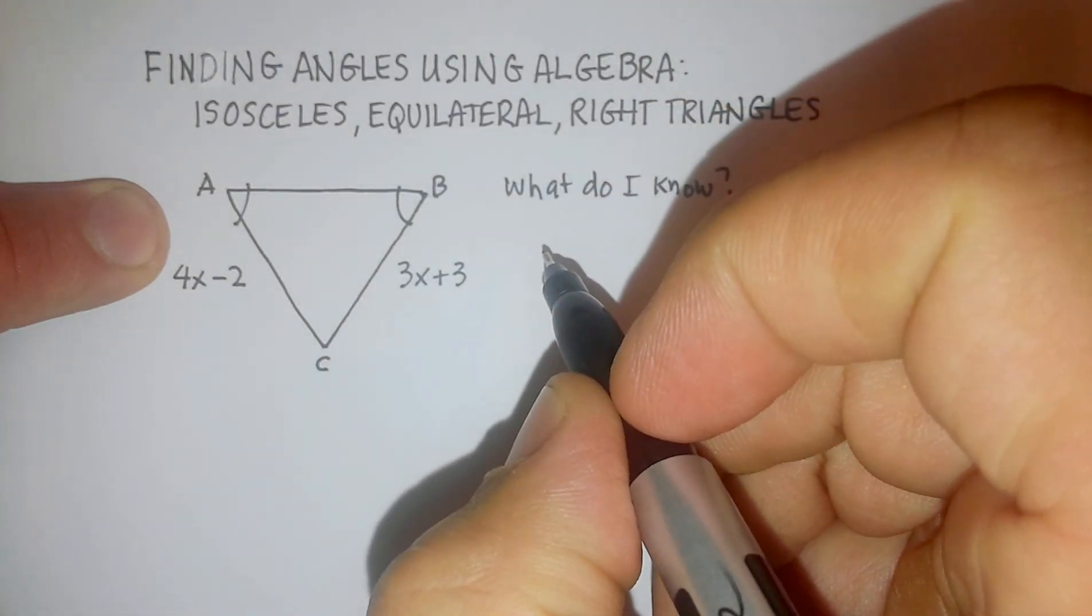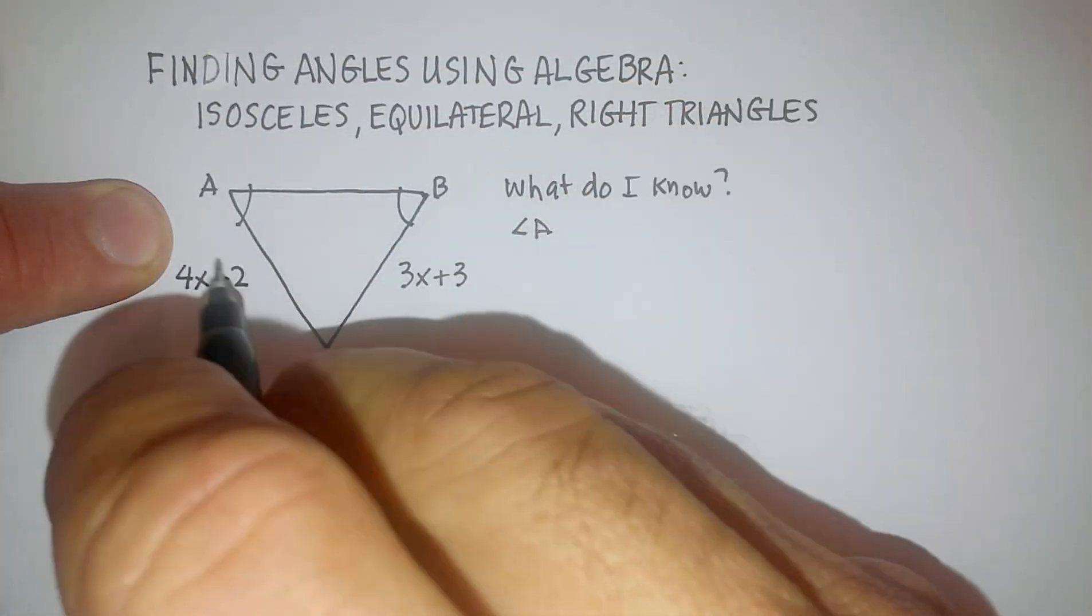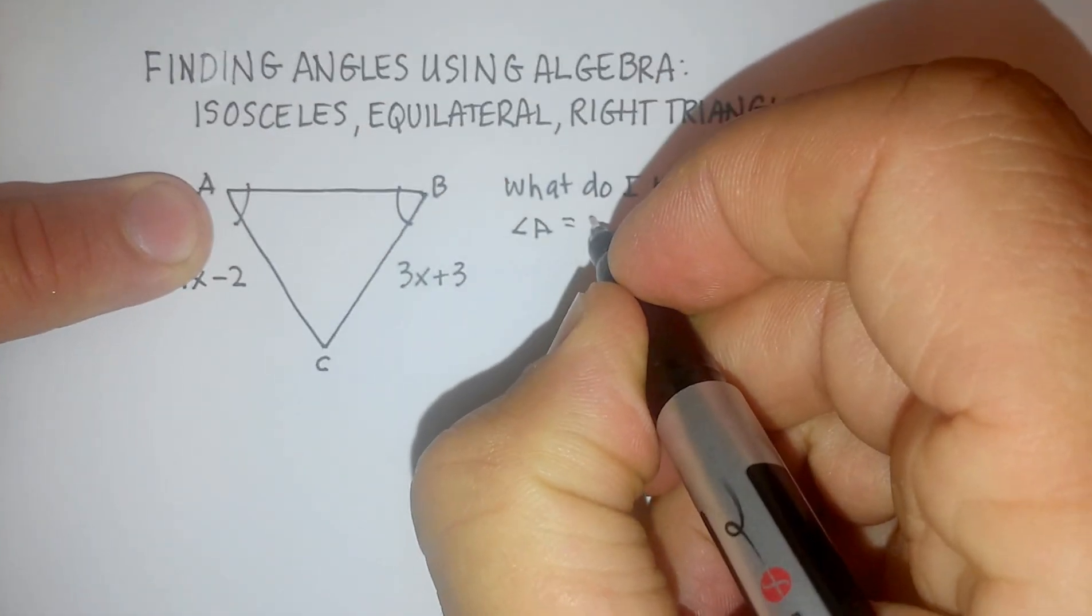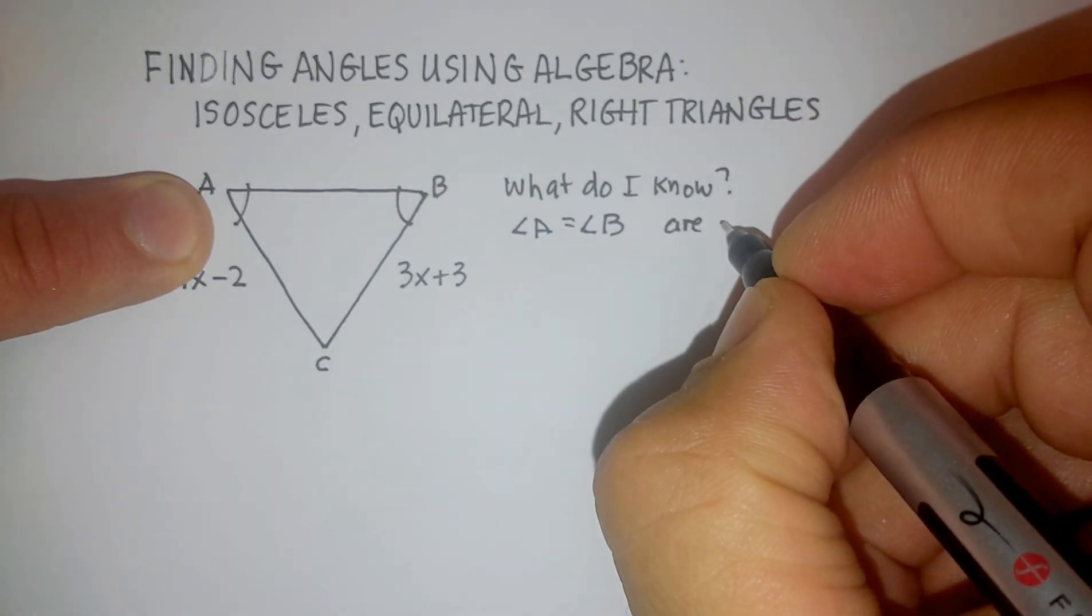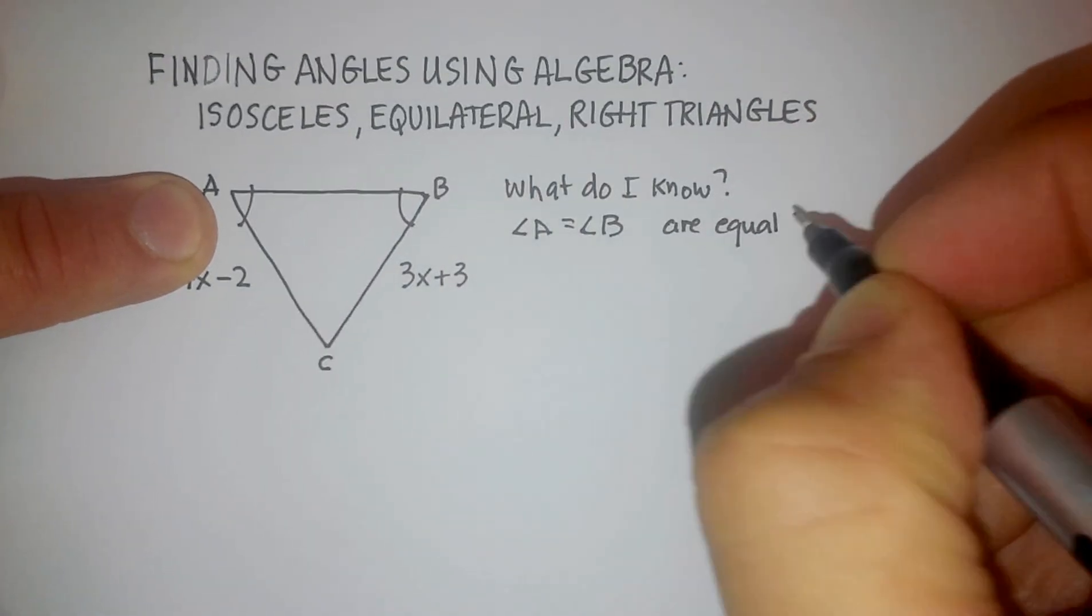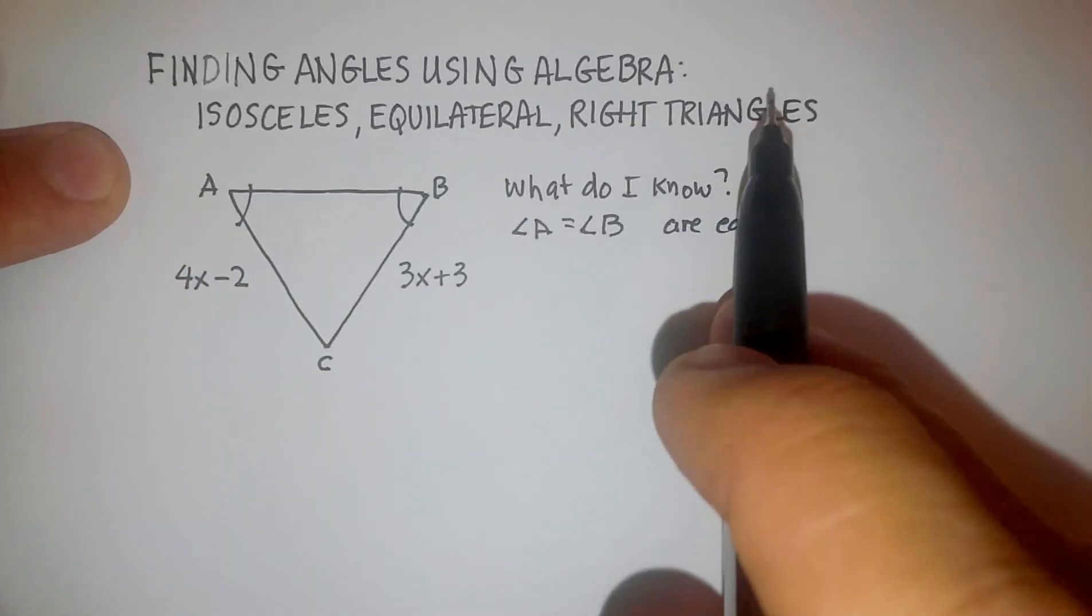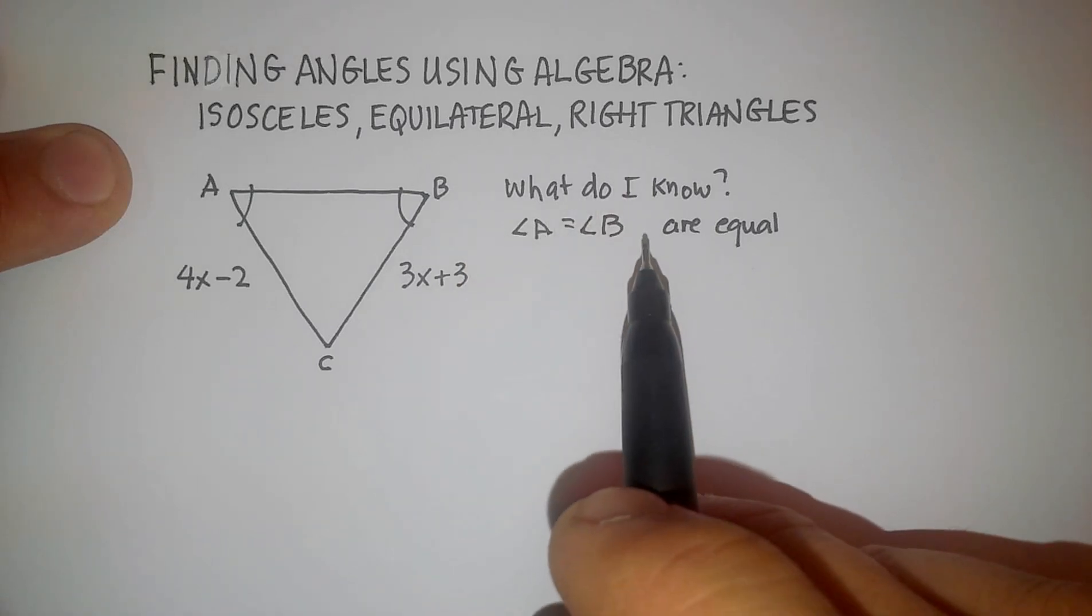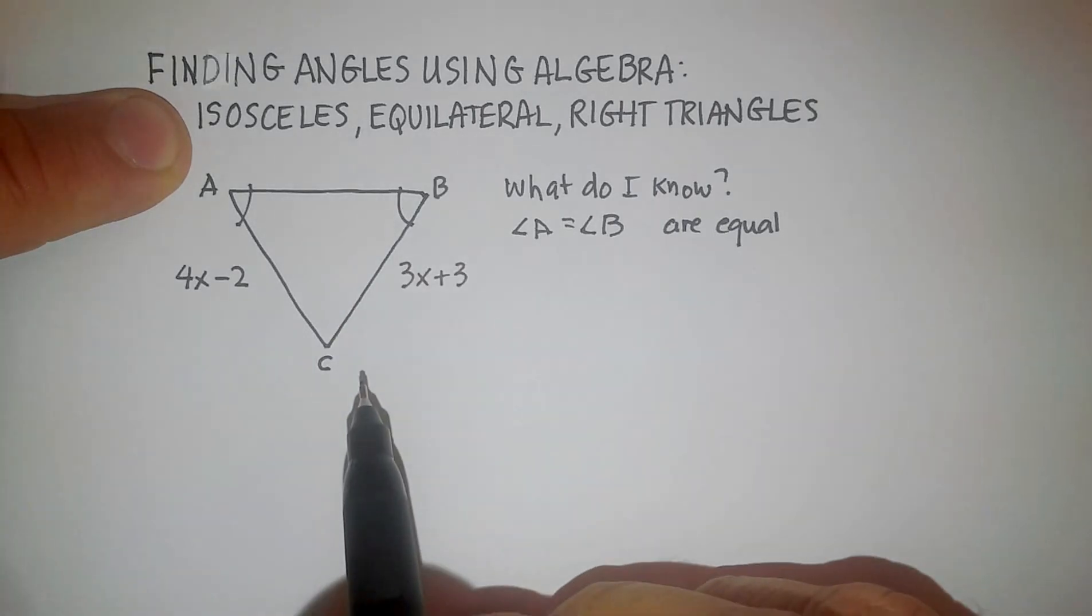So what do I know? I know that angle A is basically equal to angle B because of the information that's given here. And if they're equal, that tells me that it's one type of triangle that I have up here. Now what kind of triangle has two equal angles? And that would be isosceles or maybe equilateral.